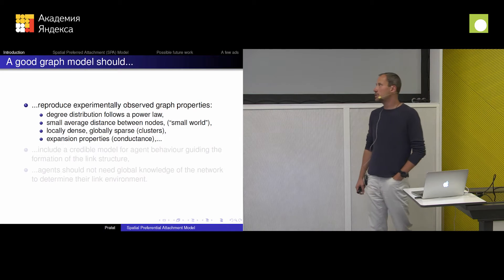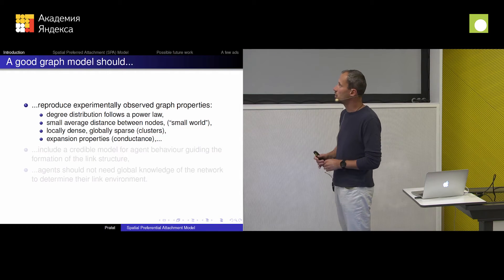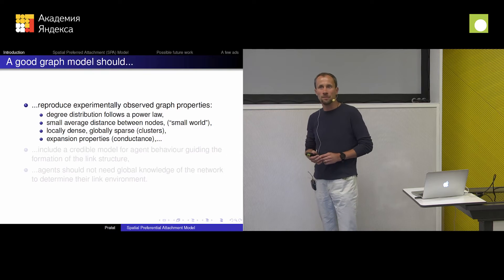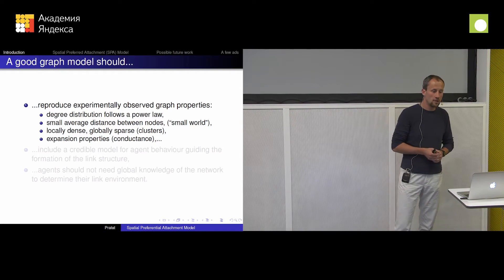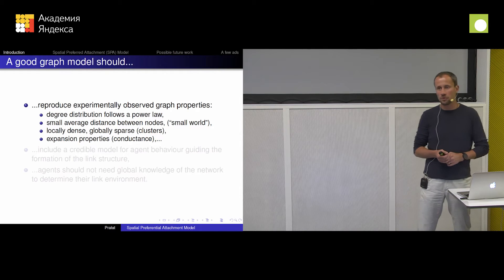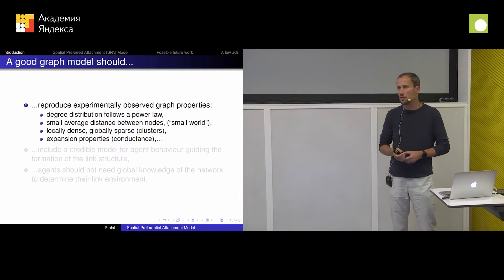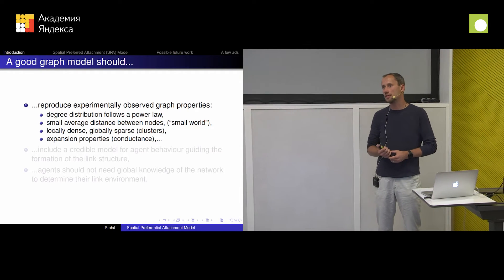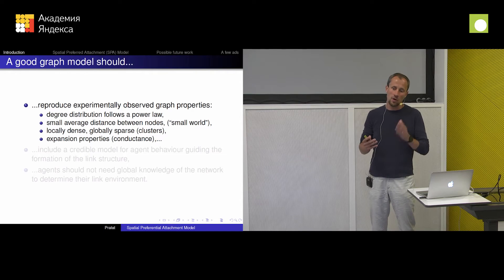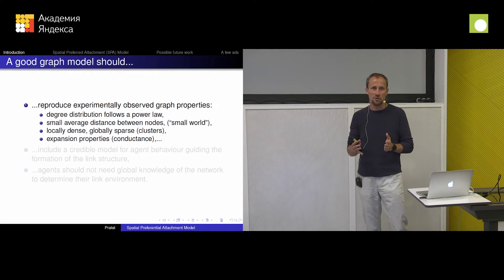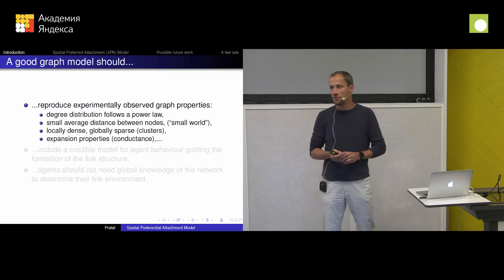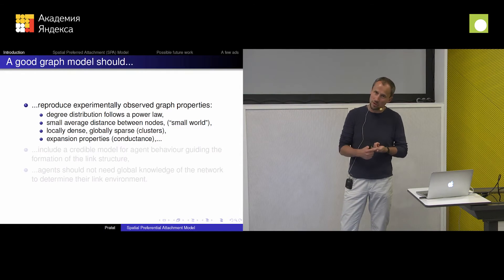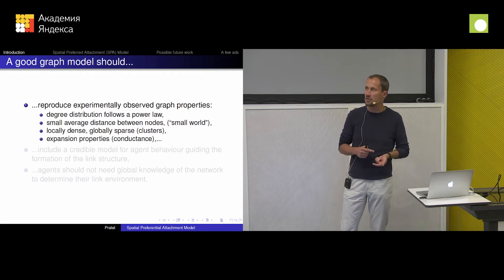So the question is: if you want to have a good model, what should we have in our model to be happy with it? Well, we should reproduce all those observed properties. It would be kind of strange to claim my model is good if it produces something completely different from what the real network looks like. So we would like to have degree distribution similar to what we want to model. We want small average distance.